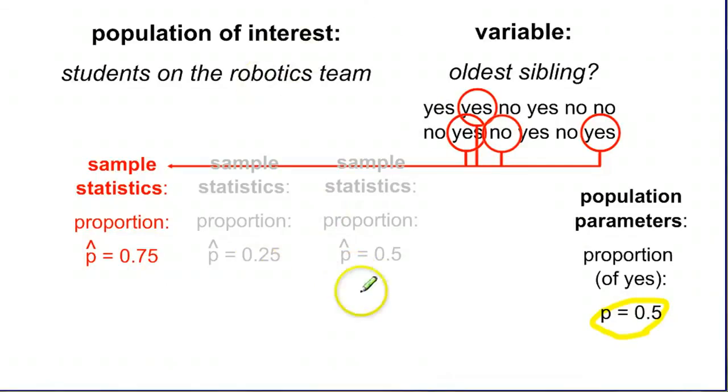Just a little side note here, we will talk about this in a sec. But we use P for a population proportion, when we know everyone, we use P.